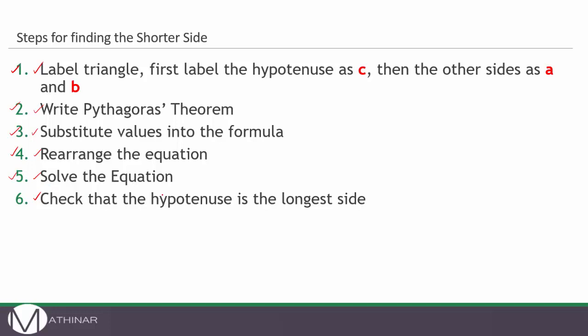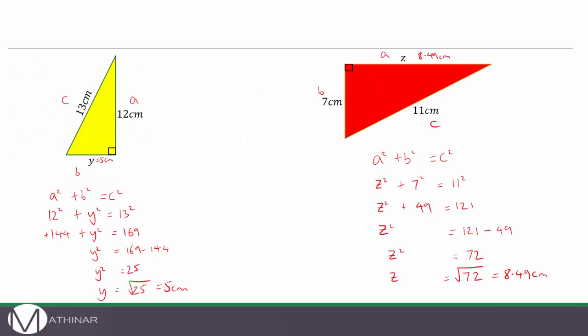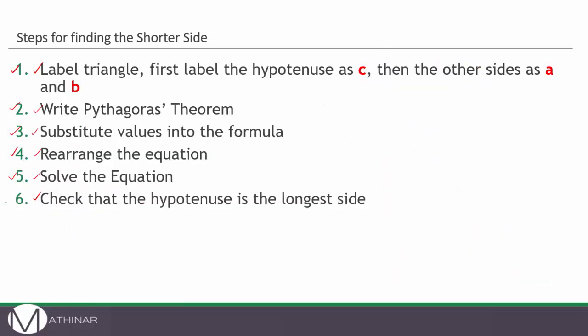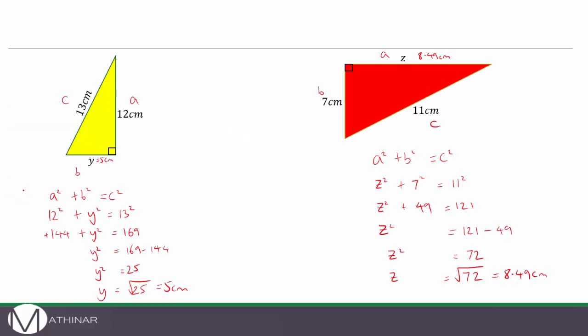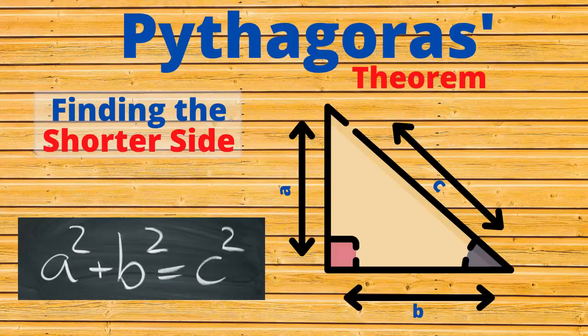Finally, check that the hypotenuse is the longest side: this side is 8.49, the other is 7, and the hypotenuse 11 is bigger than both — so that check is done and the answer seems reasonable. I hope you found this video useful; if you did, please give us a thumbs up and leave any comments below. If you haven't already watched the video on finding the longest side, make sure you click the link on screen now. Thank you for watching — see you next time, bye!